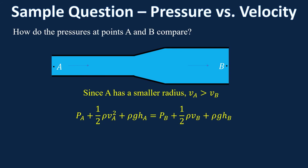Here's Bernoulli's equation for this situation. For points A and B, they both have the same height, so we can cancel that out. We just have pressure A plus one half rho vA squared equals pressure B plus one half rho vB squared. If A has the bigger velocity, that means B is going to have bigger pressure. Something really important to remember in fluid dynamics for AP Physics: if you have a higher velocity in a pipe, you're going to have a lower pressure.